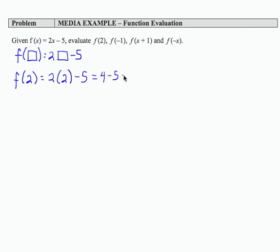If I evaluate f at an input of negative 1, now negative 1 is in my square or in parentheses. It's a very good idea to always put parentheses around your input. That's negative 2 minus 5 equals negative 7.